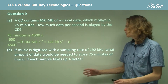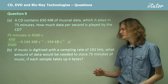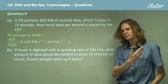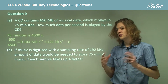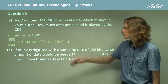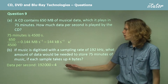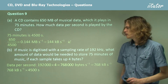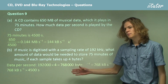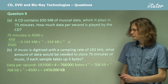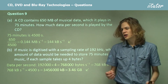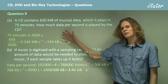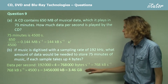If we digitize this music with a sampling rate of 192kHz, how much data would we need for 75 minutes of music? Each sample takes up four bytes — two bytes for the left audio track and two for the right. So we have four bytes per sample, 192,000 samples per second, over 4,500 seconds. That gives 768,000 bytes per second, or 768 kilobytes per second. Multiplying by 4,500 seconds gives 3.46 gigabytes — a huge amount, requiring about 7 CDs. This is why CDs use a much smaller sampling rate of 44.1kHz instead of 192kHz.